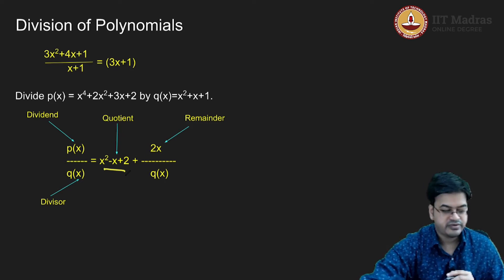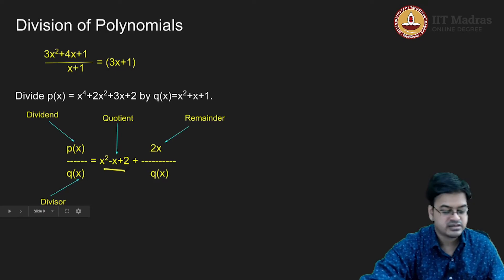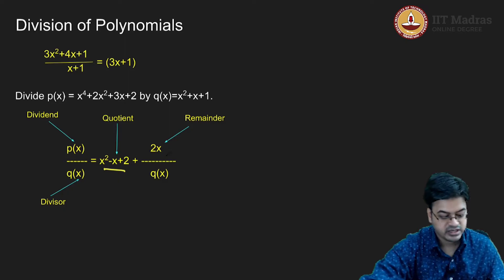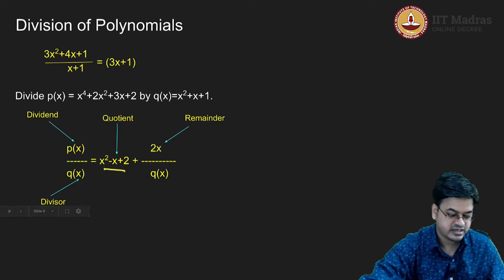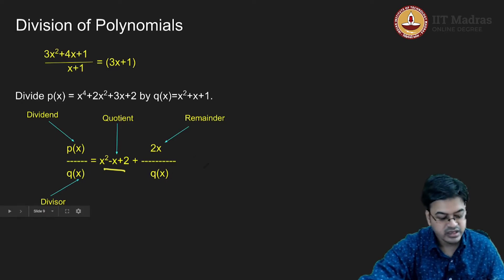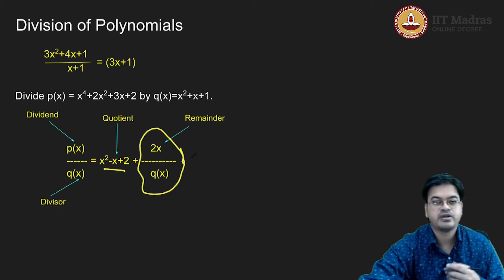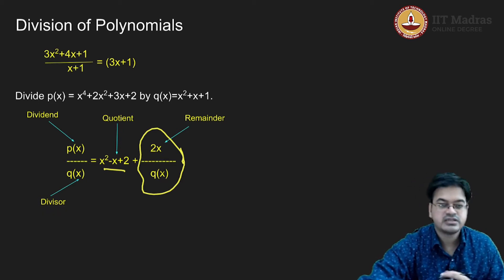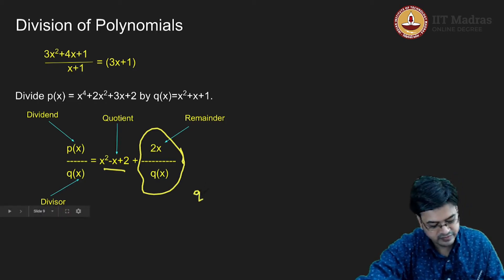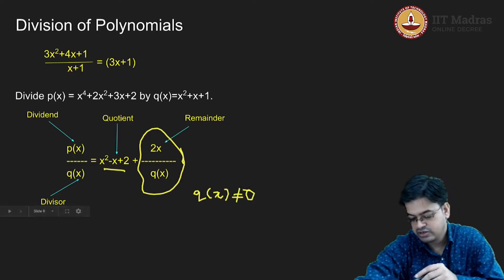Now you are very clear about the terminology. The numerator is the dividend, the denominator is the divisor, the polynomial term that you get after dividing is called the quotient, and the remainder is something where the degree of the numerator is smaller than the degree of the denominator. This is also called a rational function — division of two polynomials is a rational function, with the only condition that Q(x) cannot be equal to 0.